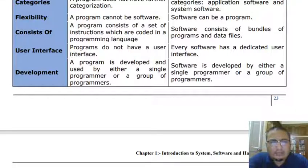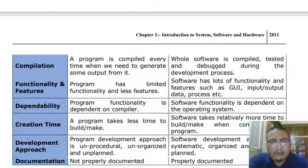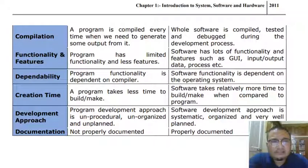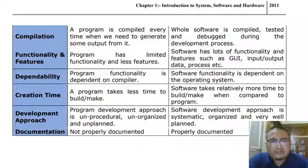Software is developed by either a single programmer or a group of programmers for others to use. In terms of compilation, every time a program is expected to deliver a result it has to be compiled, whereas a software is compiled, tested, and debugged during development time itself. A program has a limited set of functionalities and features, whereas a software is expected to have many functionalities and features such as graphical user interface, input-output processors, and central processing modules. Program functionality is often dependent on the compiler, whereas software functionality is dependent on the operating system.